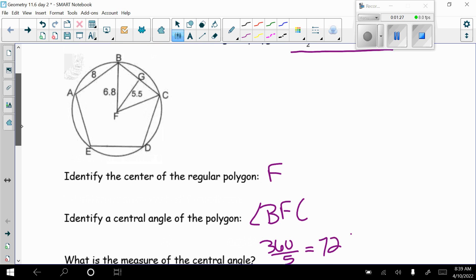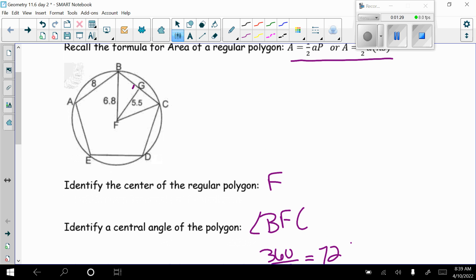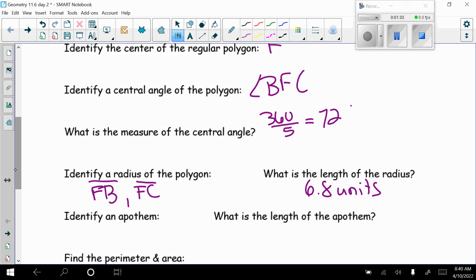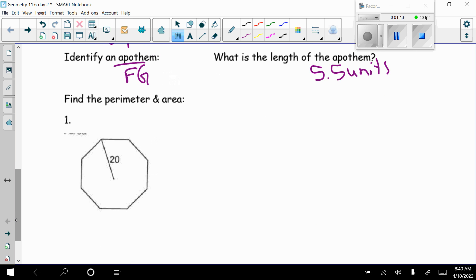Identify an apothem. And what is the length of an apothem? The apothem they have drawn, there should be a 90 there, is FG. And they have it as 5.5 units.